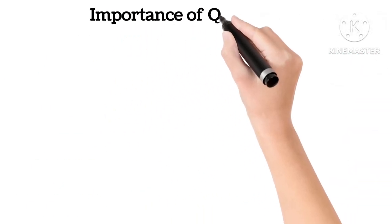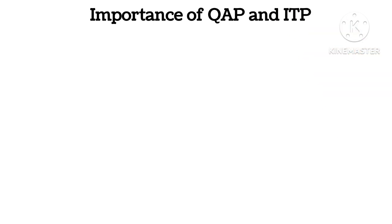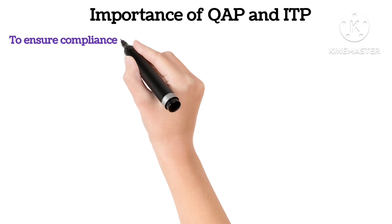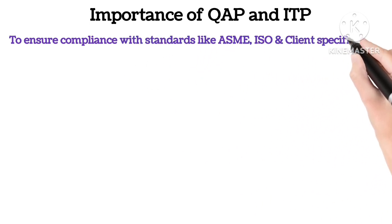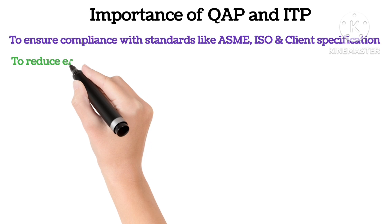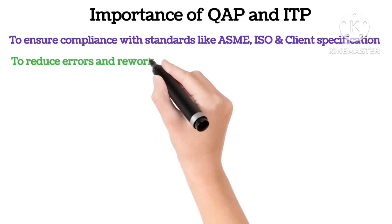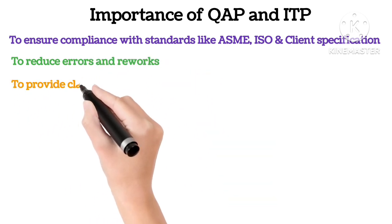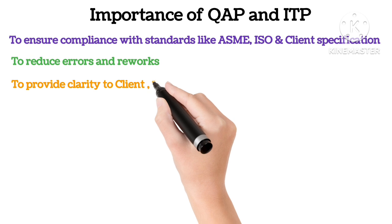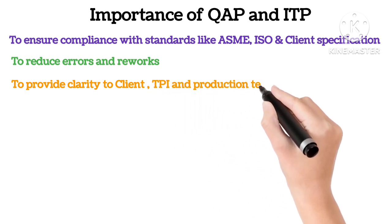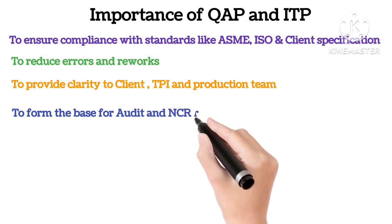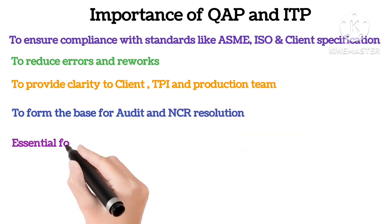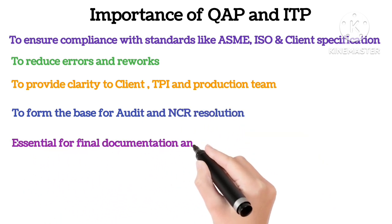Importance of QAP and ITP. Why are these documents important? To ensure compliance with standards like ASME, ISO and client specifications. To reduce errors and reworks. To provide clarity to all stakeholders — the client, third-party inspectors and the production team. To form the base of audit trails and NCR resolution. And they are essential for final documentation and project handover.